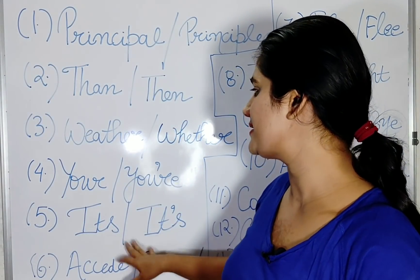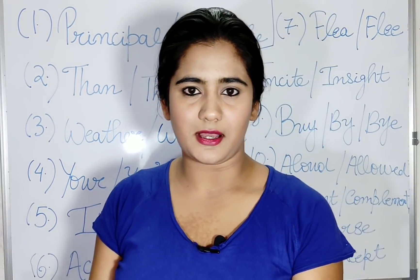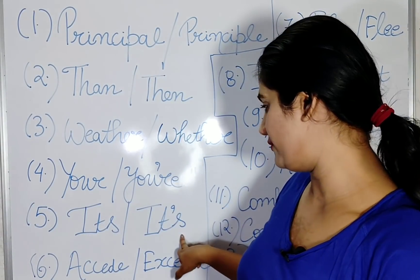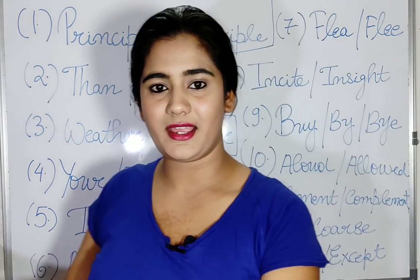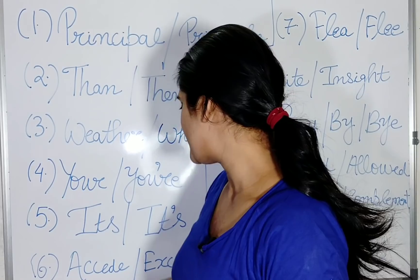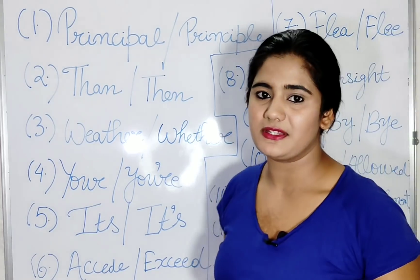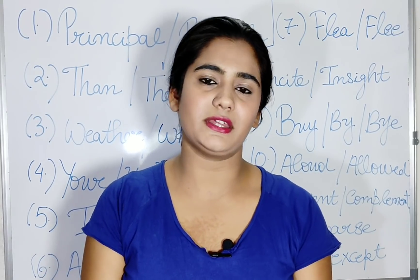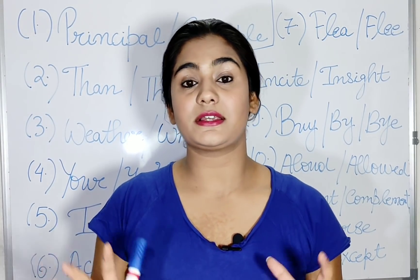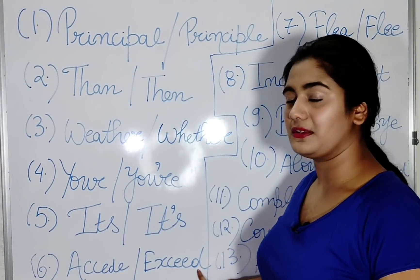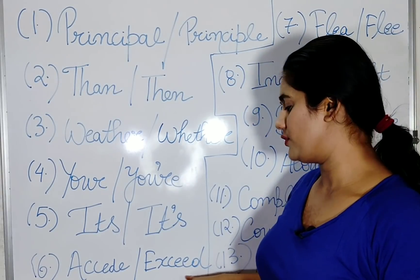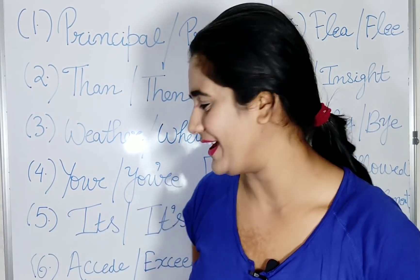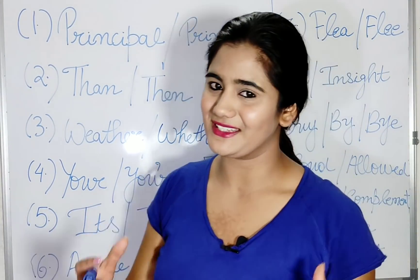Next, let's see 'its' and 'it's.' The same apostrophe rule applies. 'Its' without apostrophe is possessive — the cat is licking its paw. And 'it's' with apostrophe means 'it is' — it's a marker. Next is 'accede' and 'exceed.' Accede means to agree to do something, to go along with something, to accept something. Exceed means going beyond what is needed — for example, 'I have an excess of money.' Exceed means to have more than required.